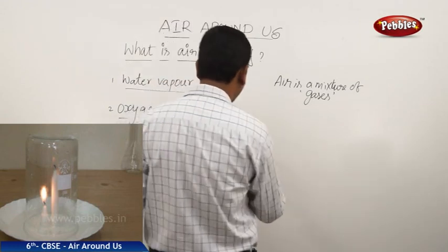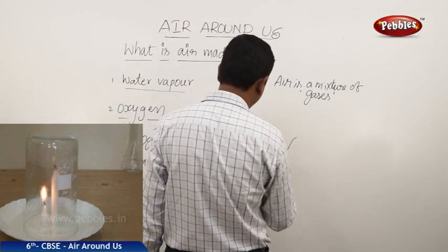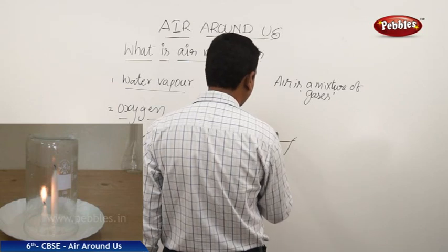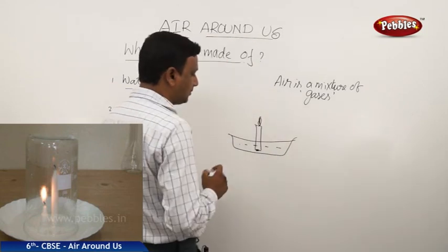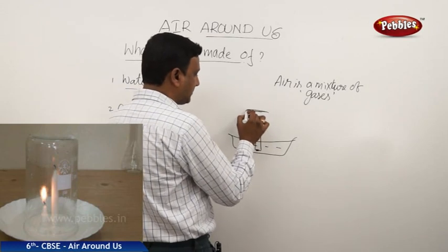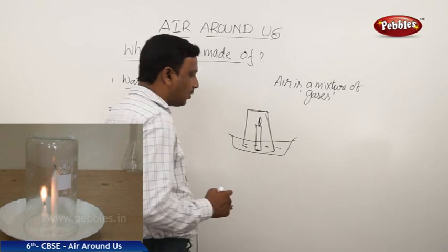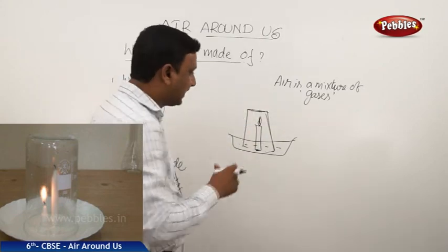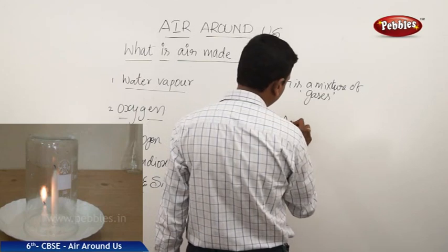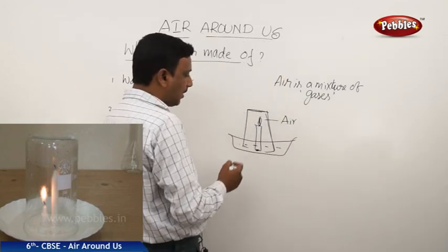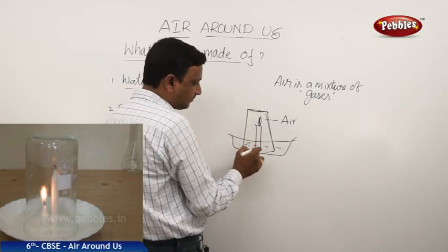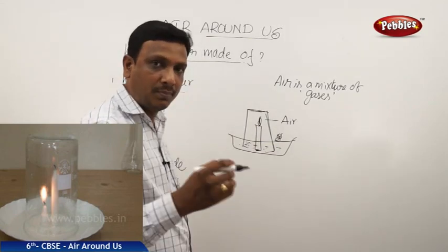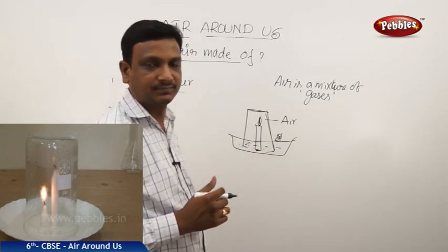Oxygen is also essential for burning — in the absence of oxygen you cannot burn anything. This can be proved with an experiment. Take a trough with water, put a candle in the water, and light the candle. Now take a glass tumbler and put it over the candle in the water, closing that area. Inside the glass there is some air, and the air outside cannot enter the glass because the water seals it.